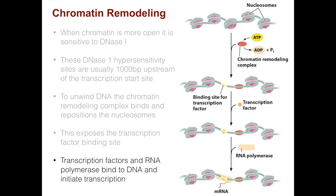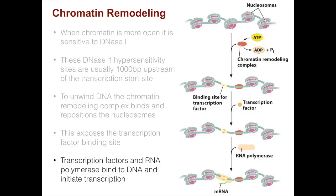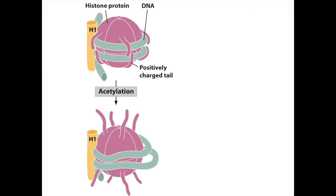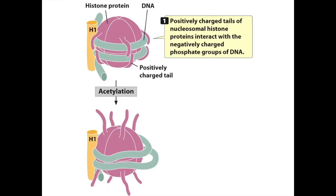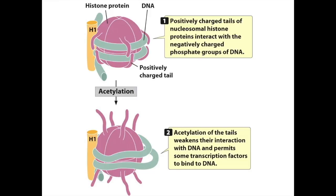Transcription factors and RNA polymerase bind to DNA and initiate transcription. One of the most well-studied ways that histones are modified is acetylation. The positively charged tails of nucleosomal histone proteins interact with the negatively charged phosphate groups of DNA. If histones are acetylated, acetylation of the tails weakens their interactions with DNA and permits some transcription factors to bind, opening up the nucleosome for transcription.